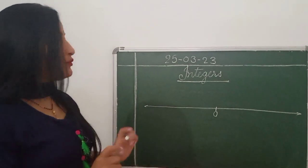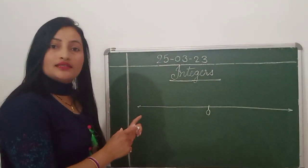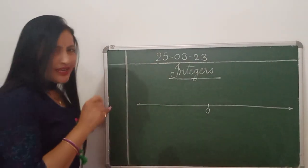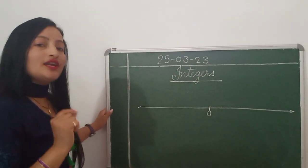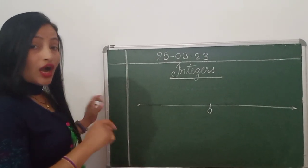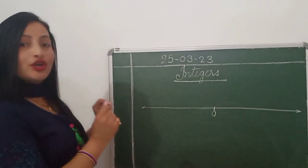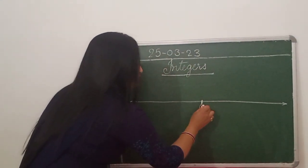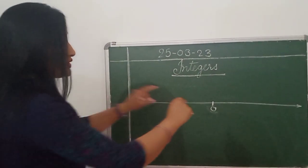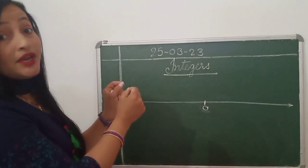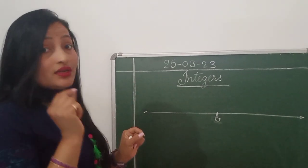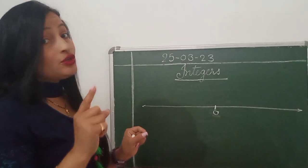Now first I am going to show the integers on a number line. See, this is the number line. Already I have drawn it on the board, but I have not written the integers — numbers are not written on the number line yet. Now how to write? You all watch how I am going to write. See, this is 0. This is the middle point — midpoint, we can say. This is 0.